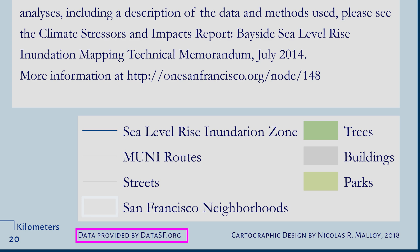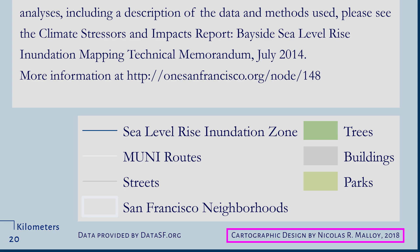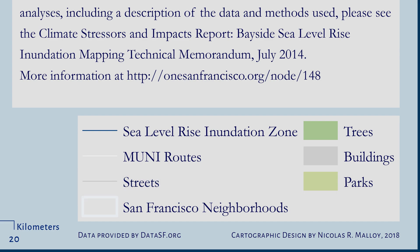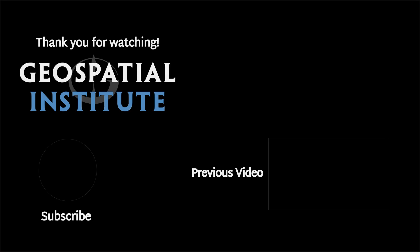Add an acknowledgement to DataSF.org at the bottom of the poster. Also, include your name and the year. When you are done creating your map poster, export the map as a PDF file with a resolution of at least 300 dpi. Save it to your final folder.